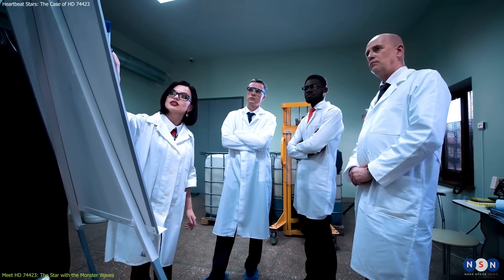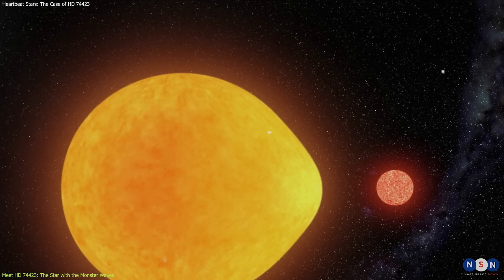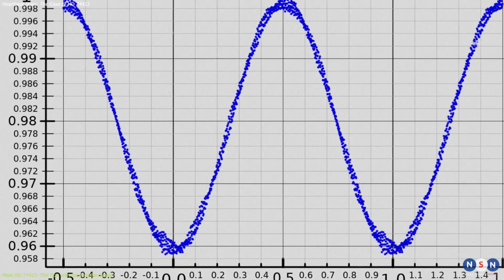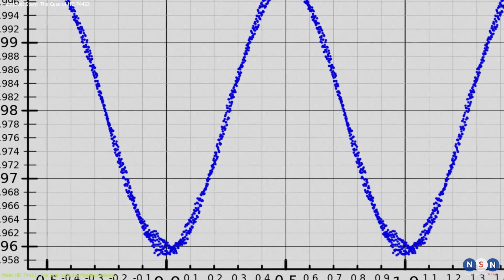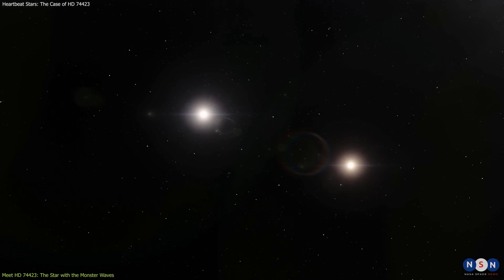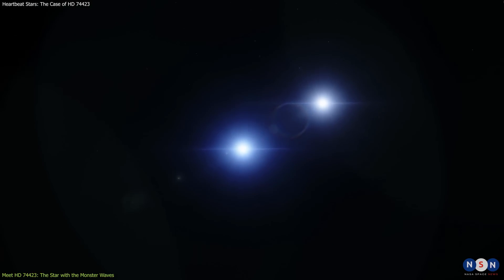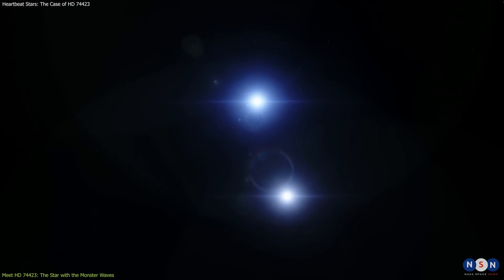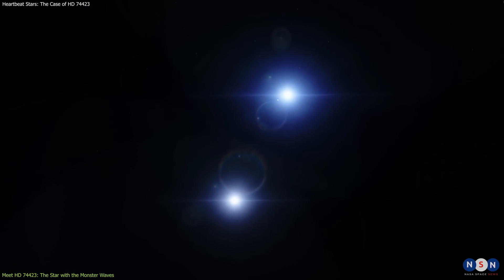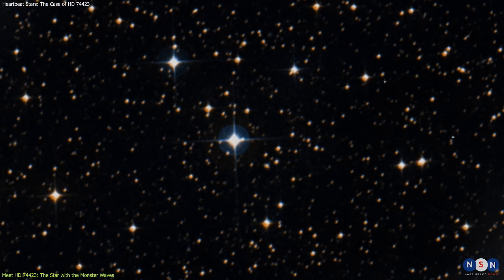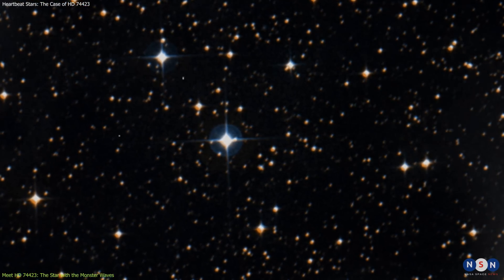One of the citizen scientists who analyzed the TESS data was Lee Rosenthal, a PhD student at Caltech. He noticed something unusual about this specific system, HD 74423. He noticed that its light curve had an unusual shape that looked like a shark fin. He realized that this was not caused by a planet, but by a star that was being distorted by its companion. He contacted professional astronomers, who confirmed his finding and studied the system in more detail using various telescopes and instruments. They found out that HD 74423 is the most extreme example of a heartbeat star ever observed.